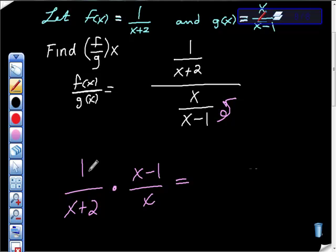And then all I'm going to do is multiply. Well, 1 times x minus 1 is x minus 1. I don't know how your instructor wants this. The way I think it should be written is, frankly, just x minus 1 over x times x plus 2.